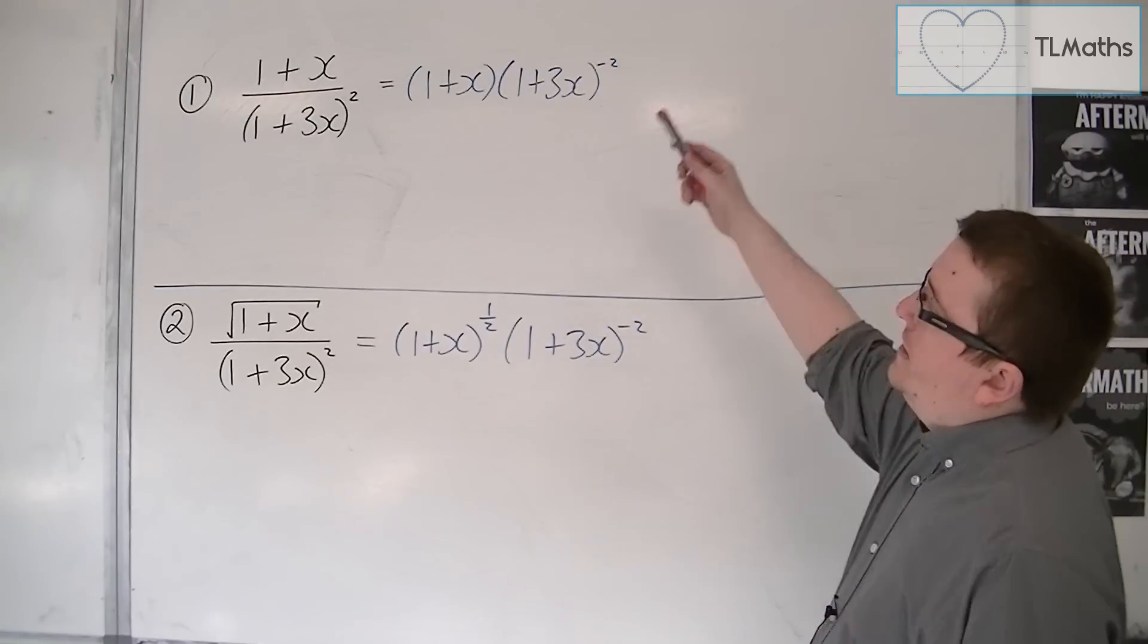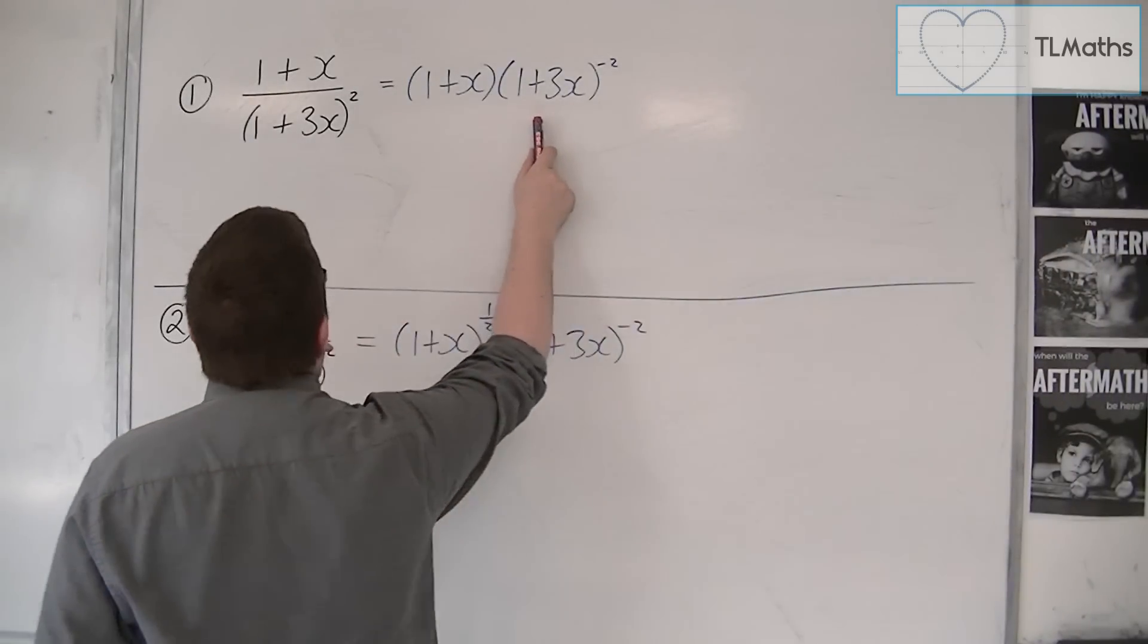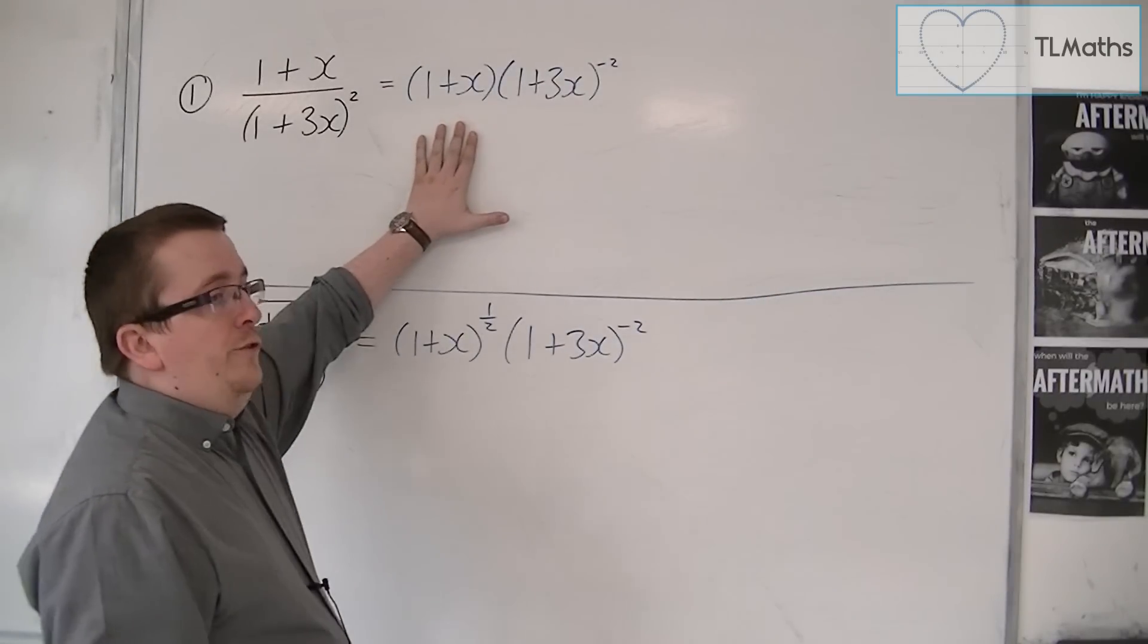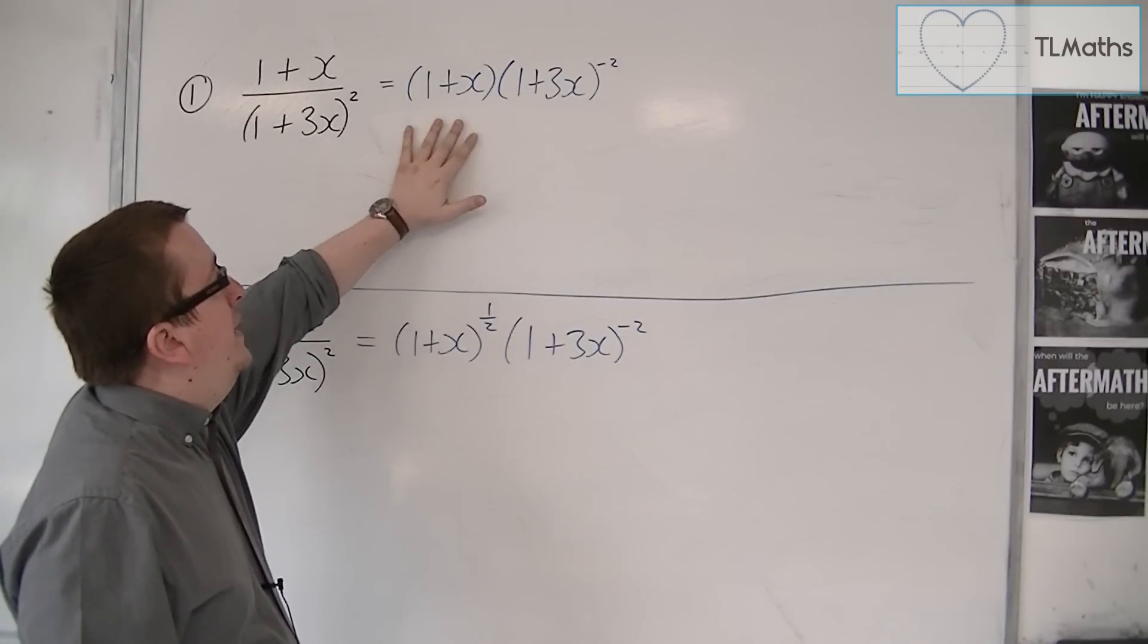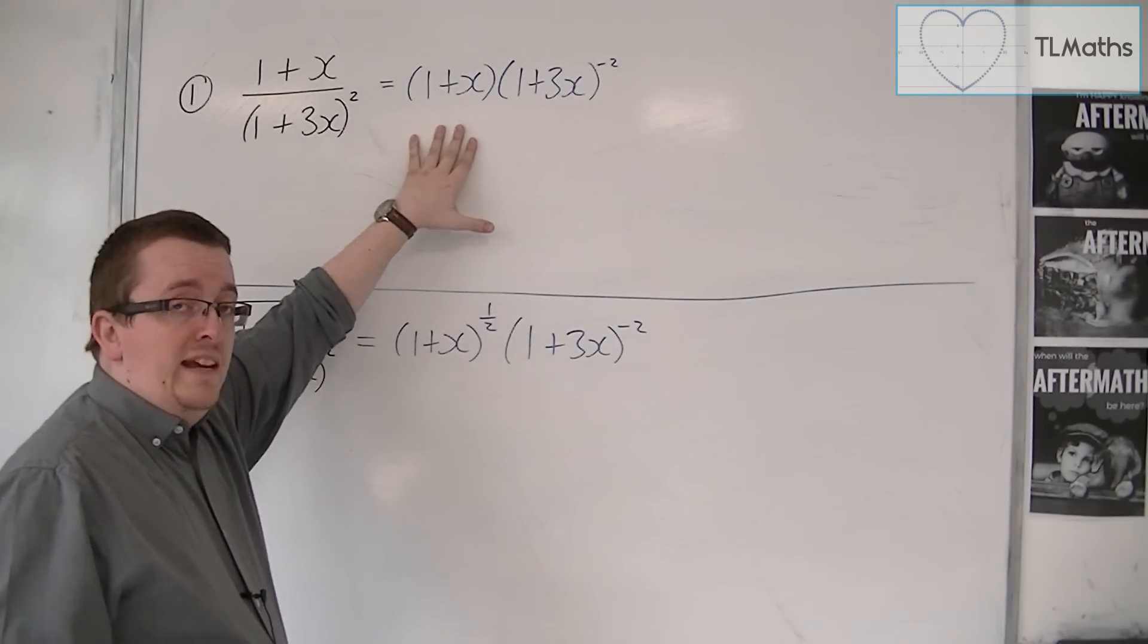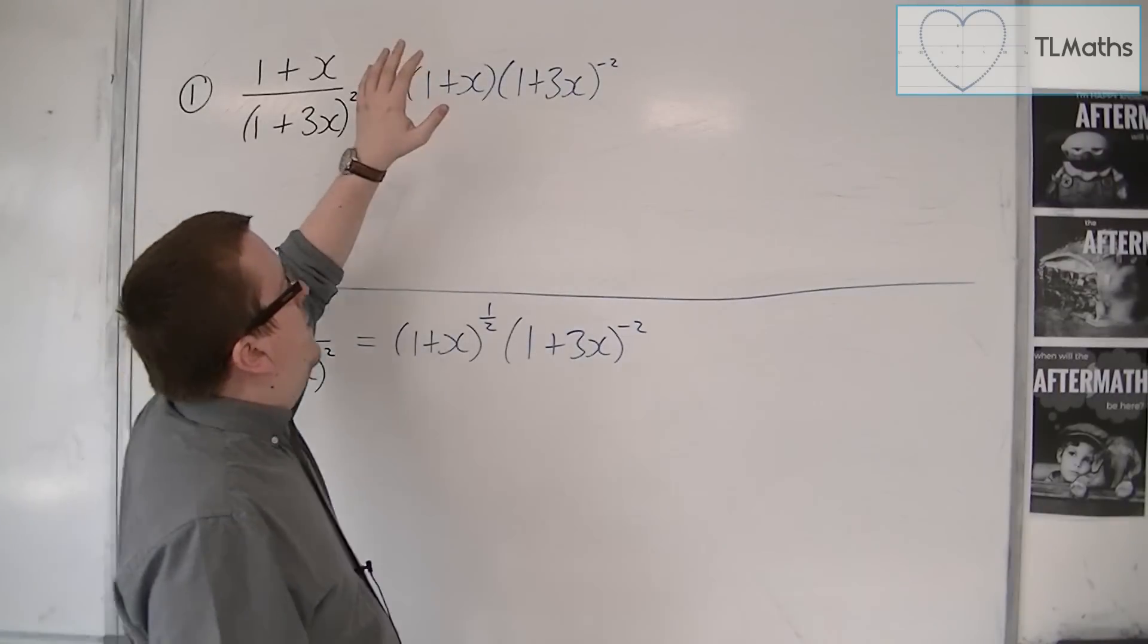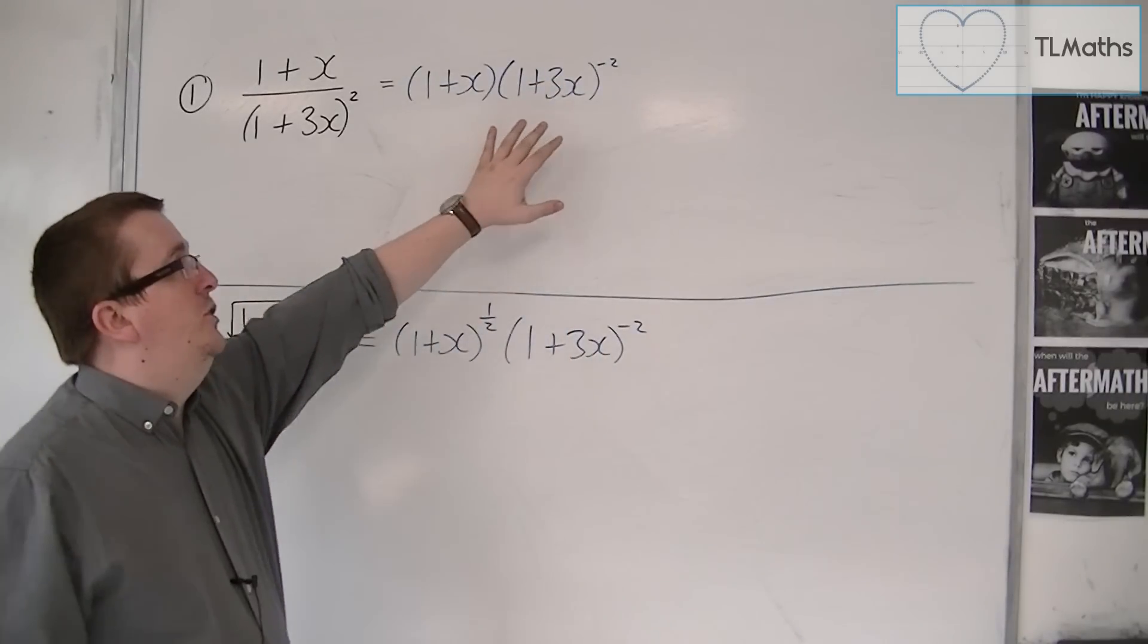So in this first case, I had 1 plus x times 1 plus 3x to the minus 2. Now, the 1 plus x is valid for all values of x. It doesn't matter what values of x I substitute into that, because it's already expanded. So that's perfectly fine. The values that I need to be careful of, however, is this 1 plus 3x to the minus 2.